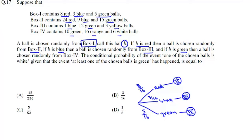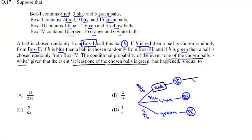We have to find the conditional probability of the event that one of the chosen balls is white, given that at least one of the chosen balls is green. If the first ball is red, then from box 2 we must get a green ball — probability of getting green from box 2 is 15 by 48. Similarly, from box 3, getting green is 12 by 16.